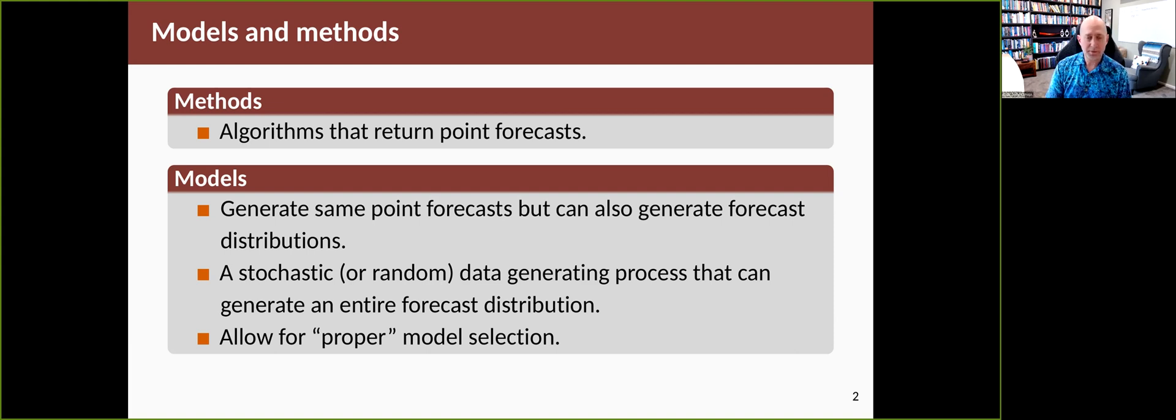And as well as being able to give you the whole distribution, it also gives you tools for model selection, so you can choose between the models which one is most appropriate for the data. So the work that began in 1997 has really revolutionized this part of forecasting and made it possible to do a lot more than was ever possible before that.